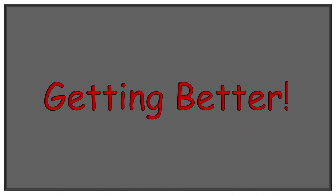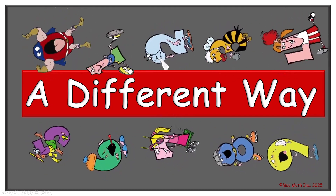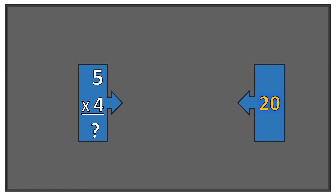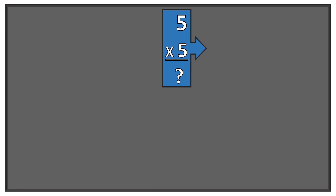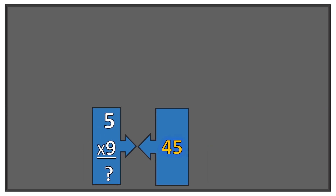Boy, you sure are getting better! Way to go! Now let's review it a different way. Is everyone in agreement? Well, it looks so! Here we go! 5 times 3 equals 15. 5 times 0 equals 0. 5 times 1 equals 5. 5 times 2 equals 10. 5 times 4 equals 20. 5 times 5 equals 25. 5 times 6 equals 30. 5 times 7 equals 35. 5 times 8 equals 40. 5 times 9 equals 45.